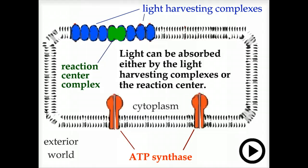Photophosphorylation. In photosynthetic bacteria and plants, chlorophyll is used to capture light. Light can be absorbed by either the light-harvesting complex or the reaction center, both of which contain chlorophyll molecules.